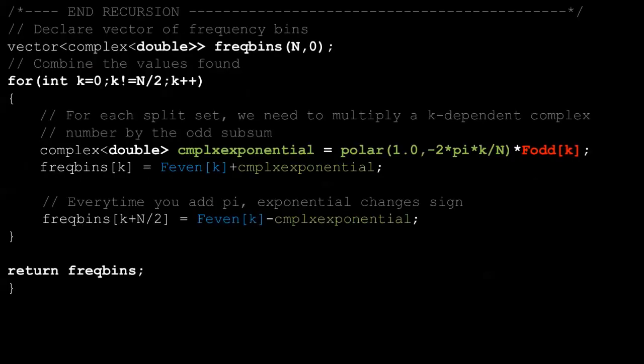Now that we're done with the recursion, we begin combining the values at each level, remembering to multiply by the green exponential. Here, we take advantage of the symmetry relation so that all frequency bins larger than n over 2, we simply use the same value but make an adjustment using the complex exponential. And the result is you get all the frequency bins.